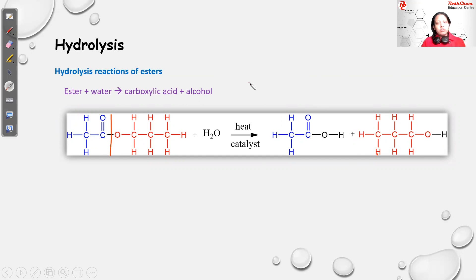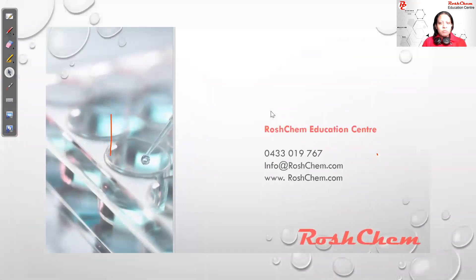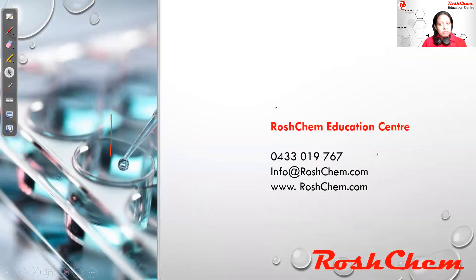Those are the five reaction types covered in VCE chemistry. Please revise using the tutorial materials and answer questions from your study guide — reactions of organic compounds are on pages 100 to 109 of the VCE Chemistry Units 3 and 4 study guide. For further information about tutoring or VCE publications, visit www.rushchem.com. Thank you.